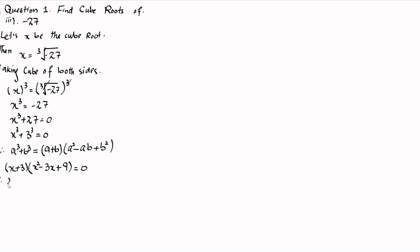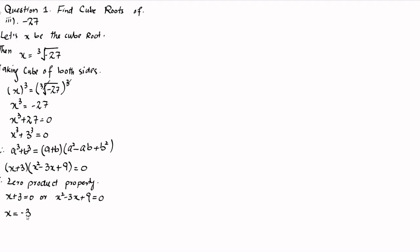Now according to the zero product property, we can write that x plus 3 is equal to 0, or x squared minus 3x plus 9 is equal to 0. Moving 3 to the right hand side, we have x is equal to minus 3.